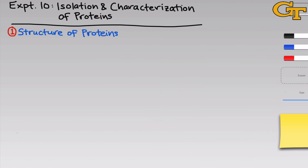Let's begin with a basic introduction to the structures of proteins. Proteins are polymers of amino acids, and a simple amino acid structure is shown here. Everywhere where you see two different types of lines come together at an angle, you can imagine a carbon sitting there, and there are some implied hydrogens not listed. This is a basic convention for organic structures throughout this video.